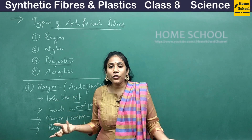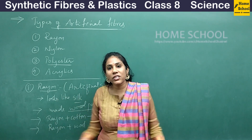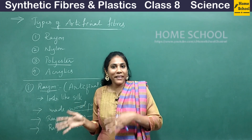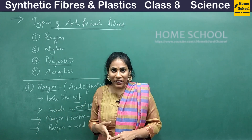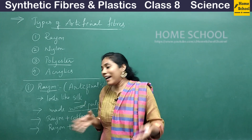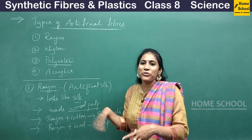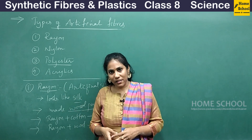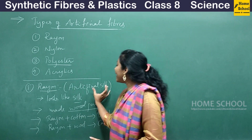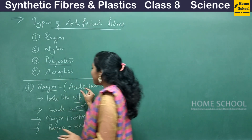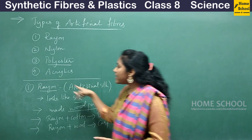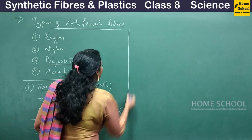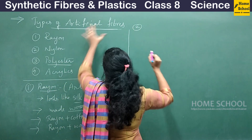Not only bed sheets and carpets — we also have rayon dress materials, like rayon shirts. For girls, lots of clothing fabric is made up of rayon. There are various varieties of rayon fibers used in various industries and for various purposes. So to remember: rayon is called artificial silk.